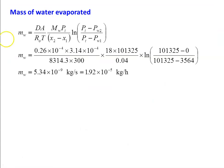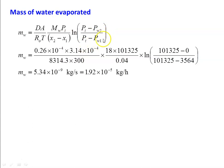This is the equation: MW equal to D times A divided by R0 times T, times MW, times total pressure divided by x2 minus x1, times the logarithm of total pressure minus PW2 divided by total pressure minus PW1. Here PW2 is the partial pressure at the top of the test tube and PW1 is the partial pressure at the bottom of the test tube.